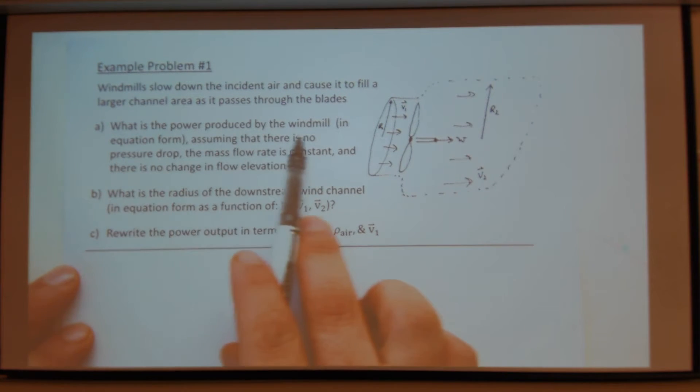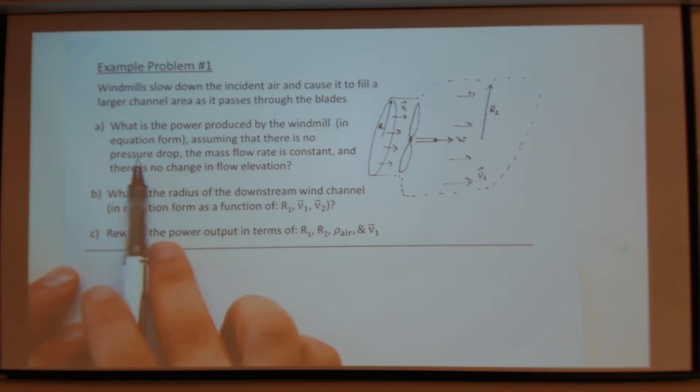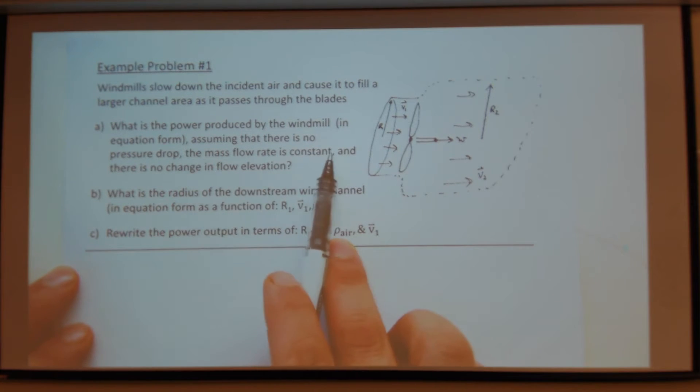And so the first question is what is the power produced by the windmill in equation form assuming there is no pressure drop, mass flow rate is constant, and there is no change in elevation.